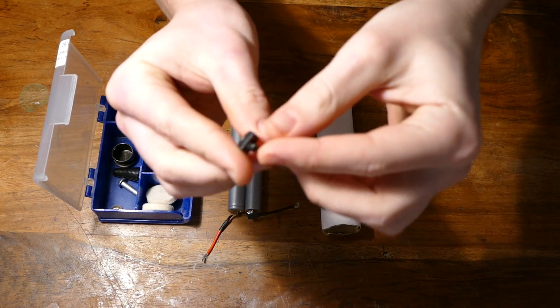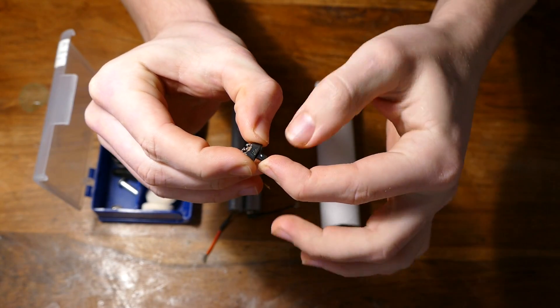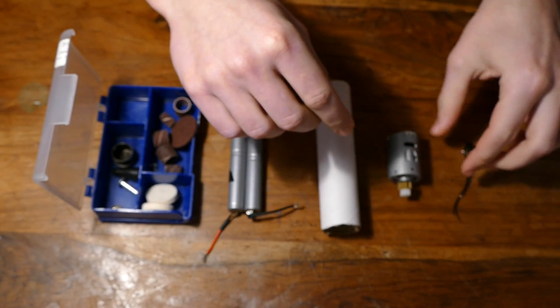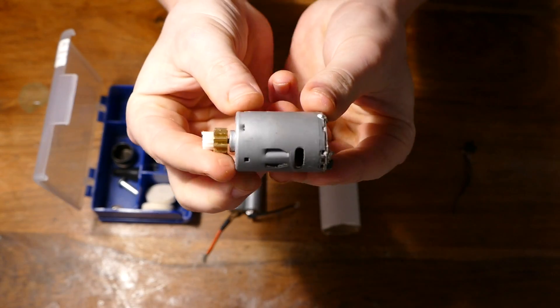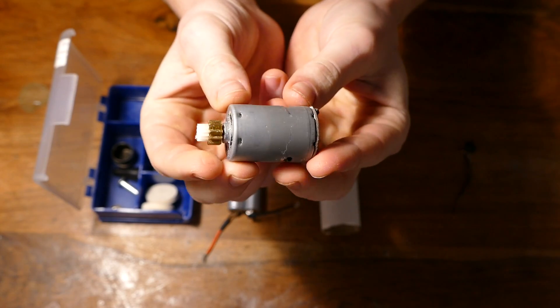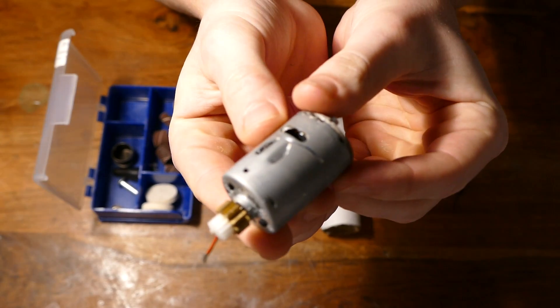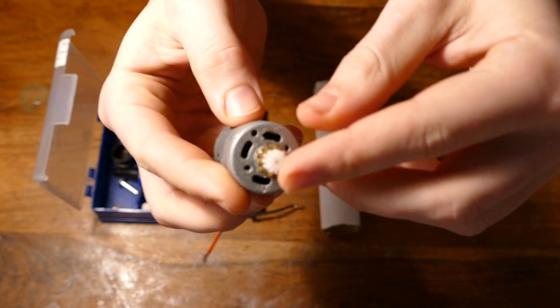Alright, for this project, you'll need an on-off switch. These can be salvaged off almost any old electronic. You'll also need a DC motor. The bigger the better. The best ones come from big RC toys. I got this one from a big RC helicopter.